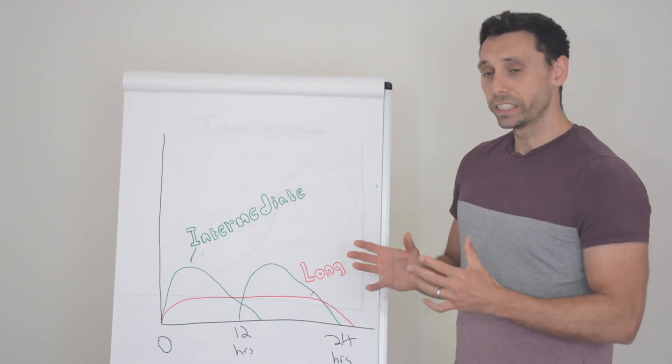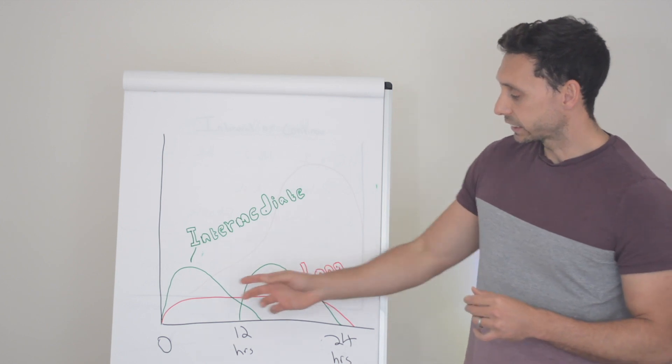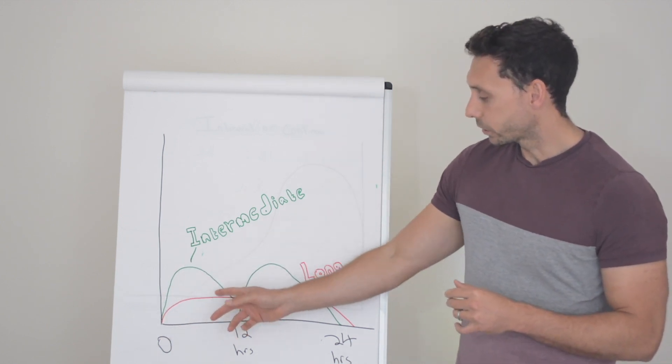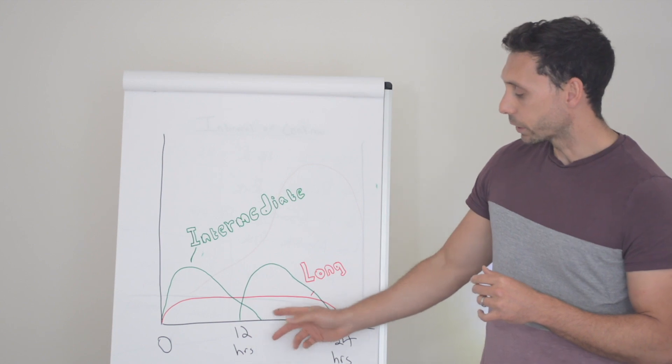So comparing them then, we can see that intermediate acting insulins do have this slight peak compared to the long actings and they also run out much quicker. What are the benefits of intermediate acting insulins?